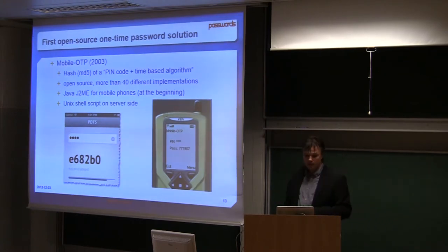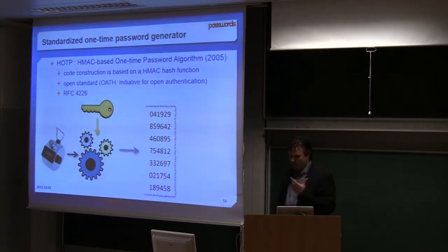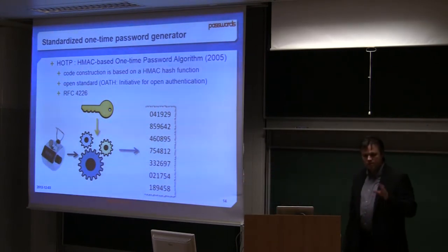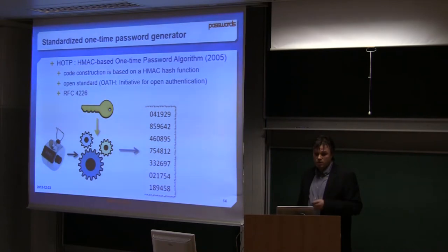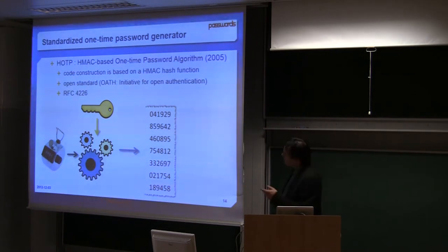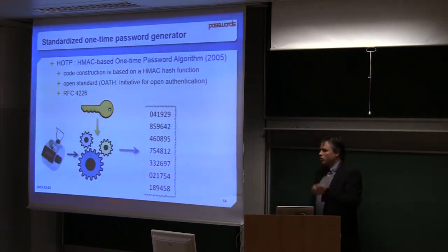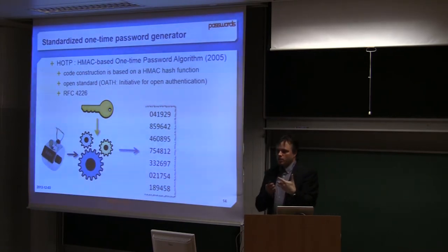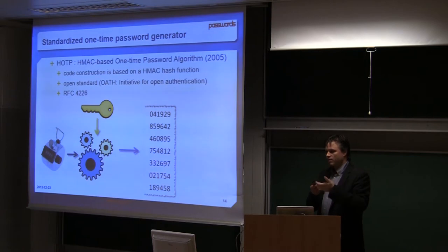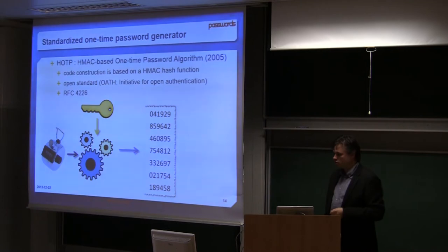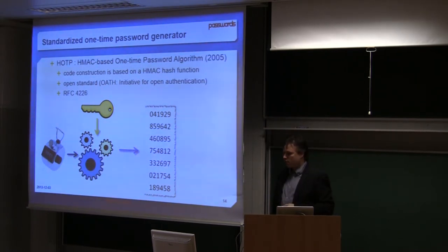OATH made initiative for open authentication made a standard. The first one was HOTP, HMAC-based one-time password algorithm. With this, the code construction is based on a hash function. You have a counter, and when you click on your counter, you have a seed and the password depends on the counter and the special seed you make for each token. The seed must be unique for each token, and each time you process your HMAC you will have a new password.